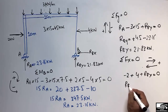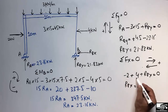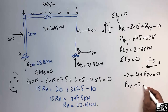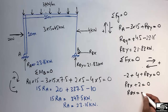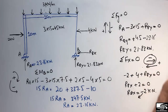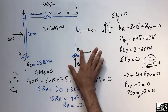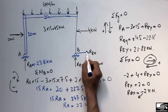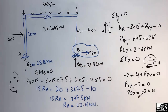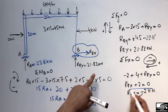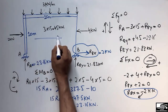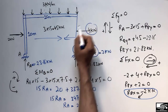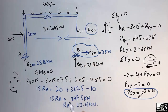The negative sign indicates that R_BX actually acts in the opposite direction to what was assumed. Correcting the direction, R_BX = 2 kN acts in the direction of the 2 kN force. So 2 kN and 2 kN together are balanced by the 4 kN force, and all horizontal forces are now in equilibrium.